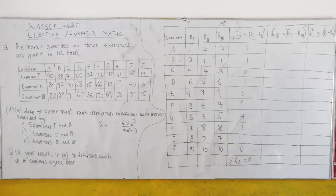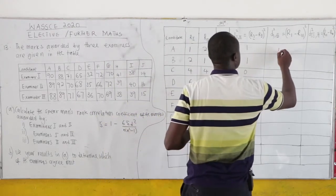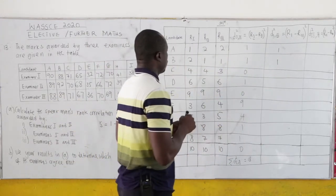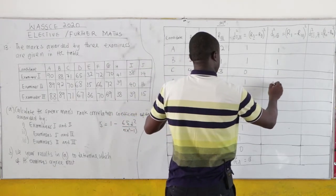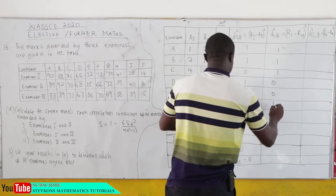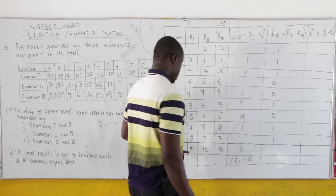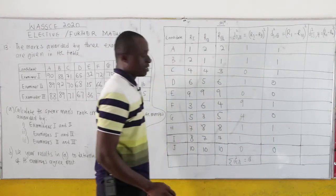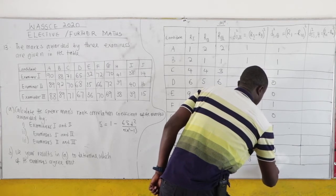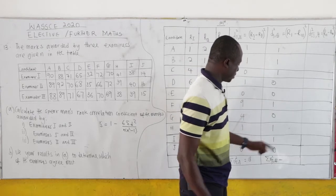Next, we find the deviations for examiners 1 and 3, computing R1 minus R3 squared. The differences are: −1 squared = 1, 1 squared = 1, 1 squared = 1, 0 squared = 0, 0 squared = 0, −1 squared = 1, 0 squared = 0, −1 squared = 1, 1 squared = 1, and 0 squared = 0. Summing these gives ΣD²(1,3) = 6.